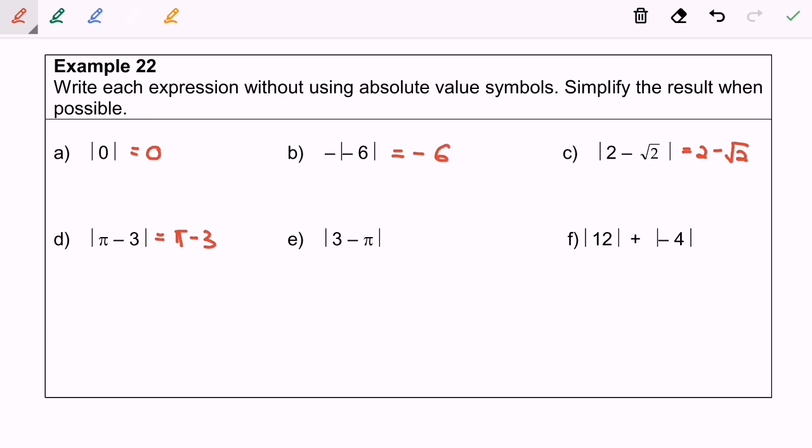E, modulus of 3 minus pi and our answer will be pi minus 3. For f, we have modulus of 12 plus modulus of negative 4. So we will have 12 plus 4 and finally we have our answer 16. So here we are and thanks for watching.